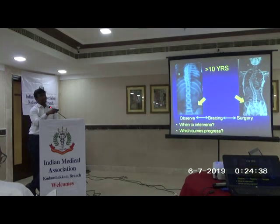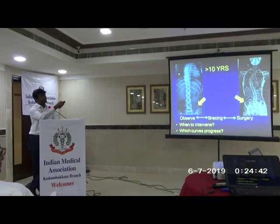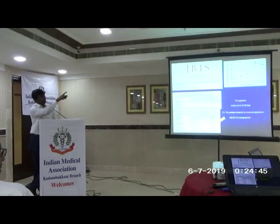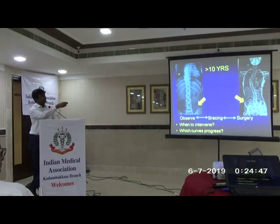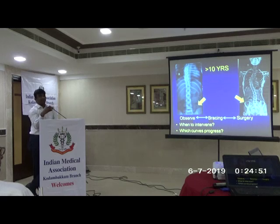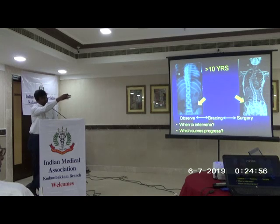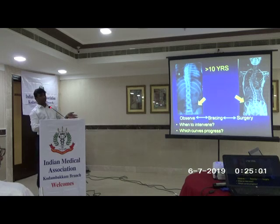Treating a mature spine is comparatively easier. In a case scenario of a child greater than 10 years, if the Risser grade is 1, there is still a little growth potential. If the Risser is 5, growth is almost complete but the curve may be significant. So we need to know when to observe, when to brace, and when to do surgery.